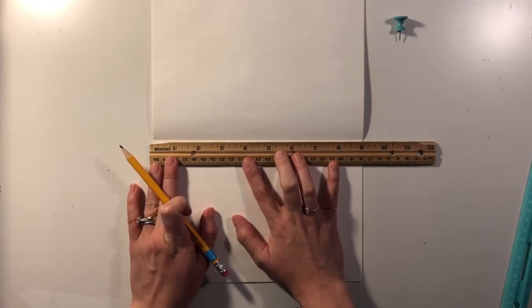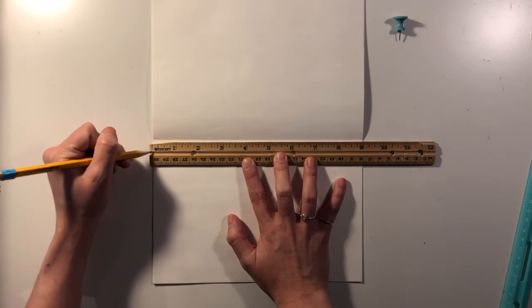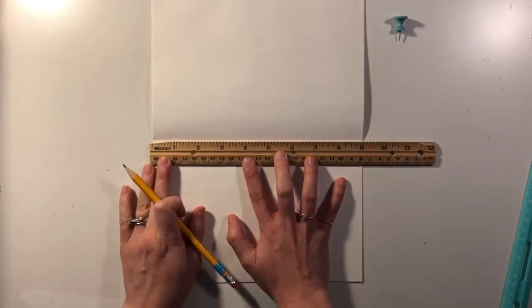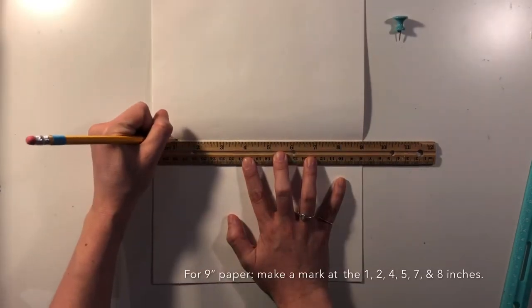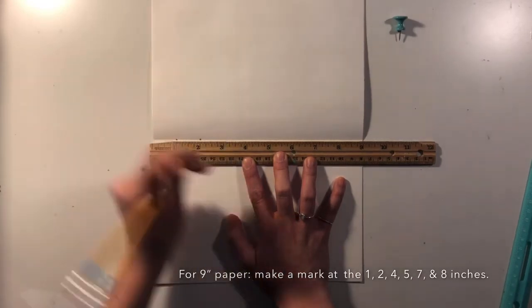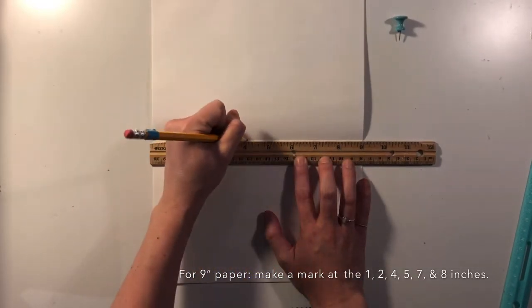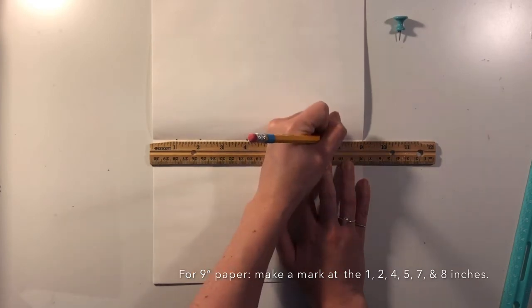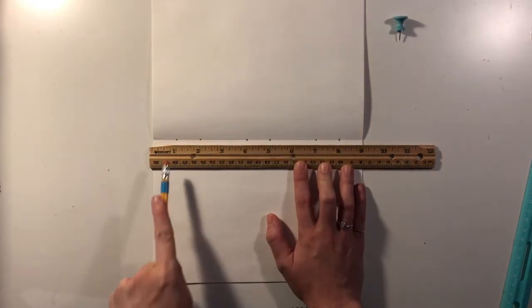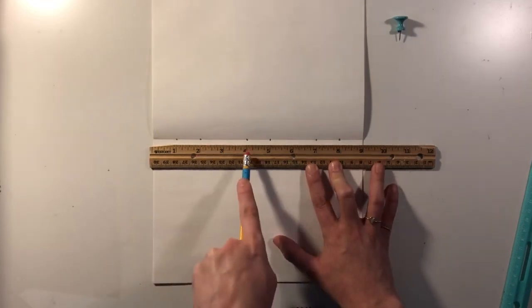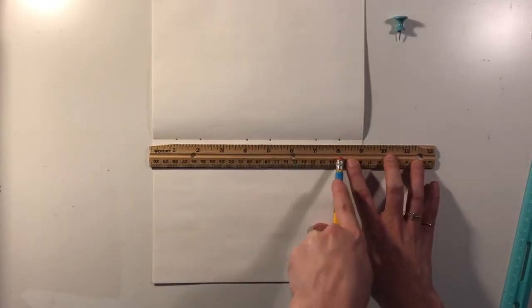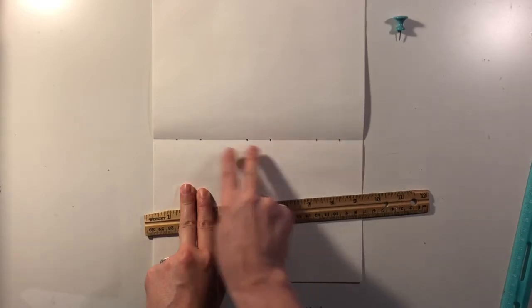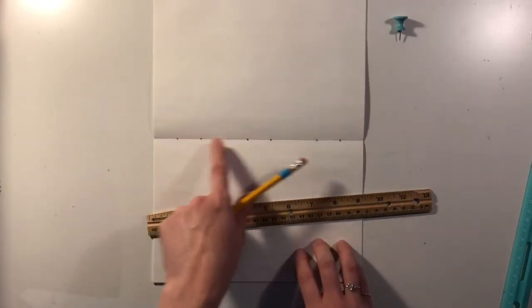If you have this lined up down here on your zero, right on the center crease line, you're going to put a mark at the one inch, the two inch, the four inch, five, seven, and eight. So again, those numbers are the one inch, two, four, five, seven, eight. And what that's going to do is give us three pairs of dots that are nice and evenly spaced that we're going to use to sew our books.